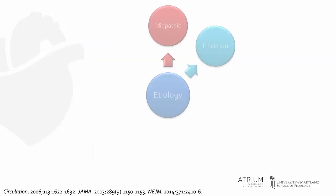There are several etiologies of pericarditis. The major two etiologies include idiopathic or infectious causes. Up to 90% of cases are idiopathic or viral in developed countries. In contrast, tuberculosis is the most common cause in developing countries.